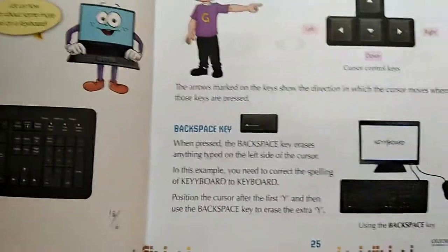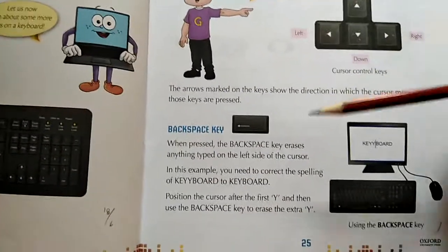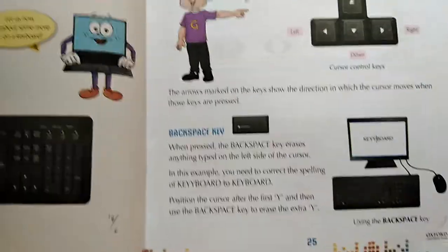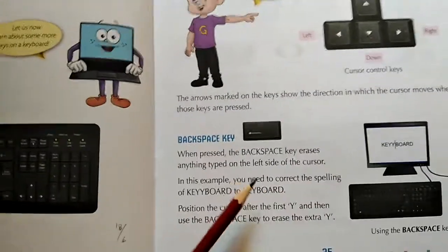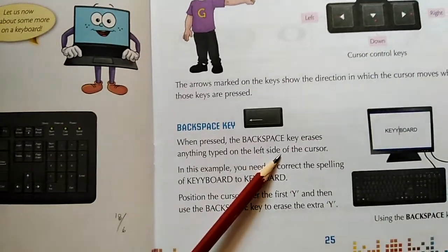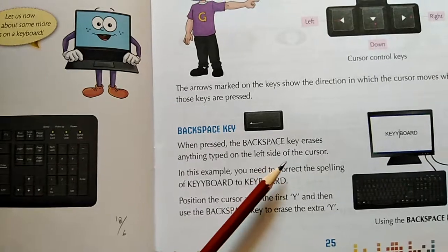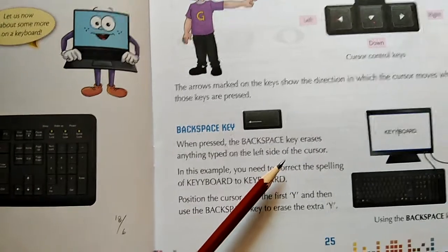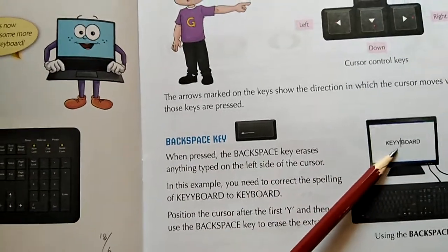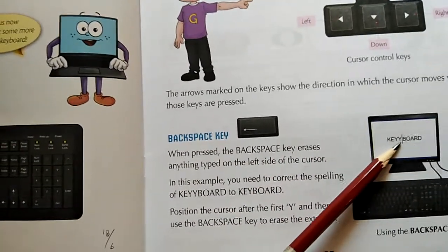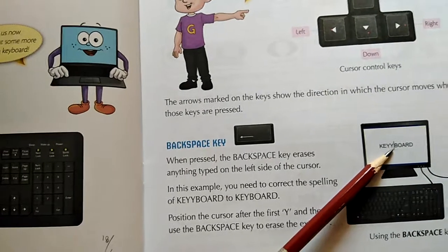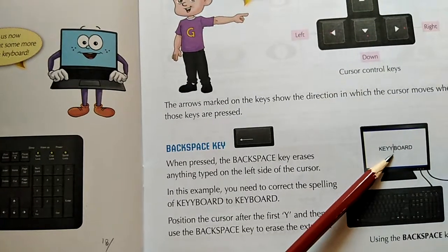Then there is the backspace key. This is a very special key. It is used to erase things which you don't want. For example, if a spelling has been typed incorrectly — like 'KEYY' — and you want to erase that extra Y from there.